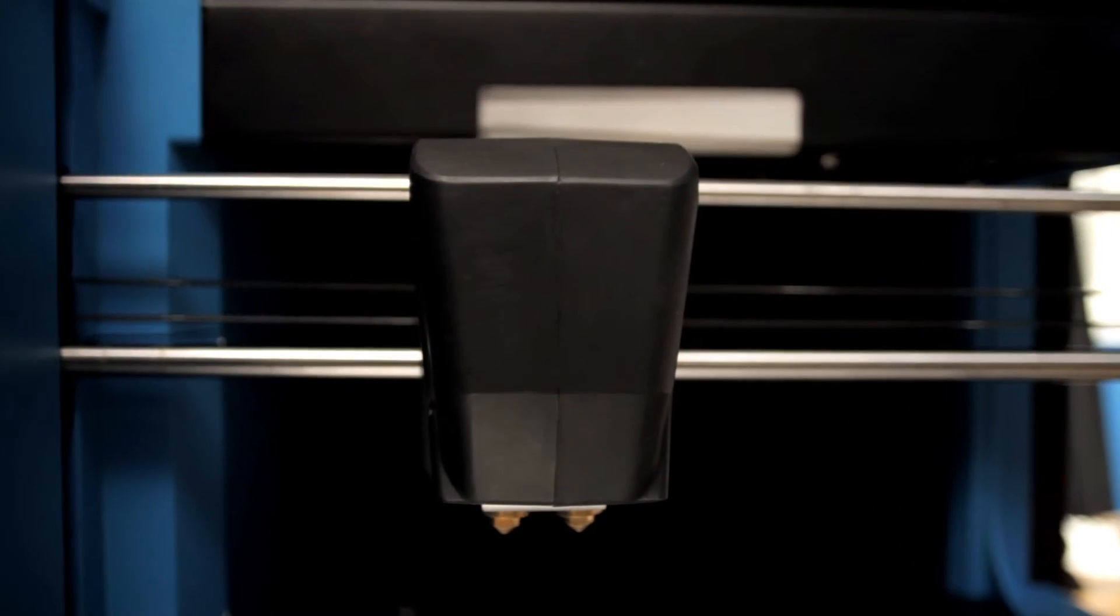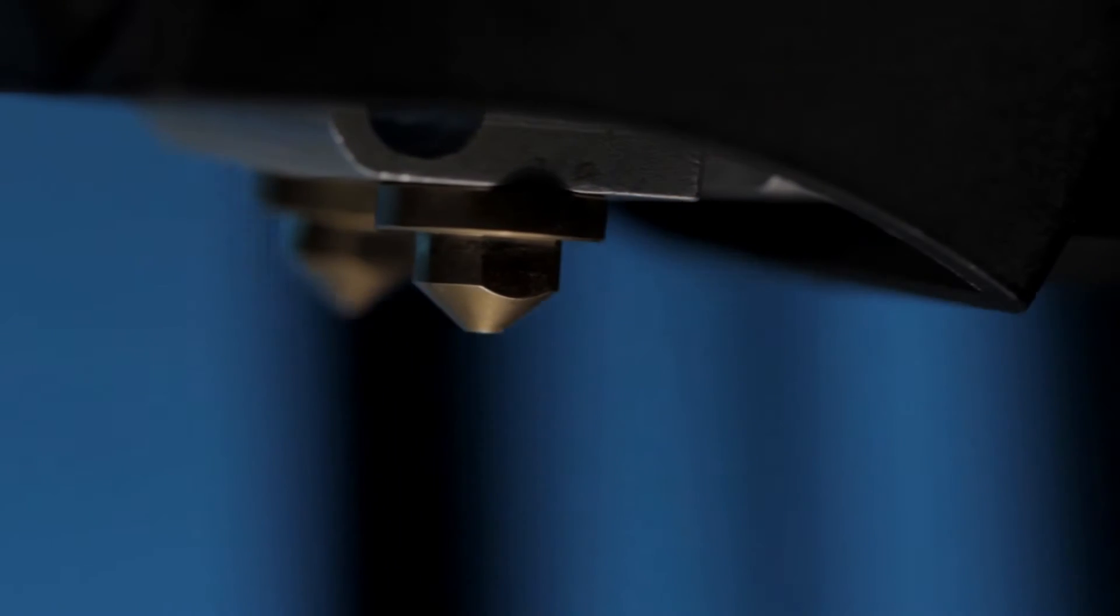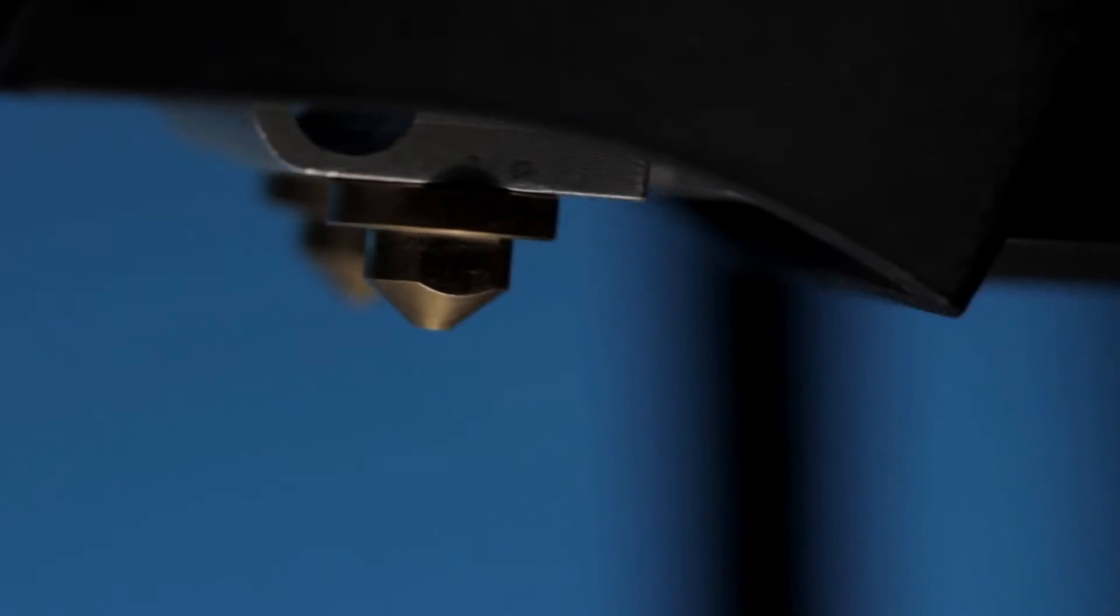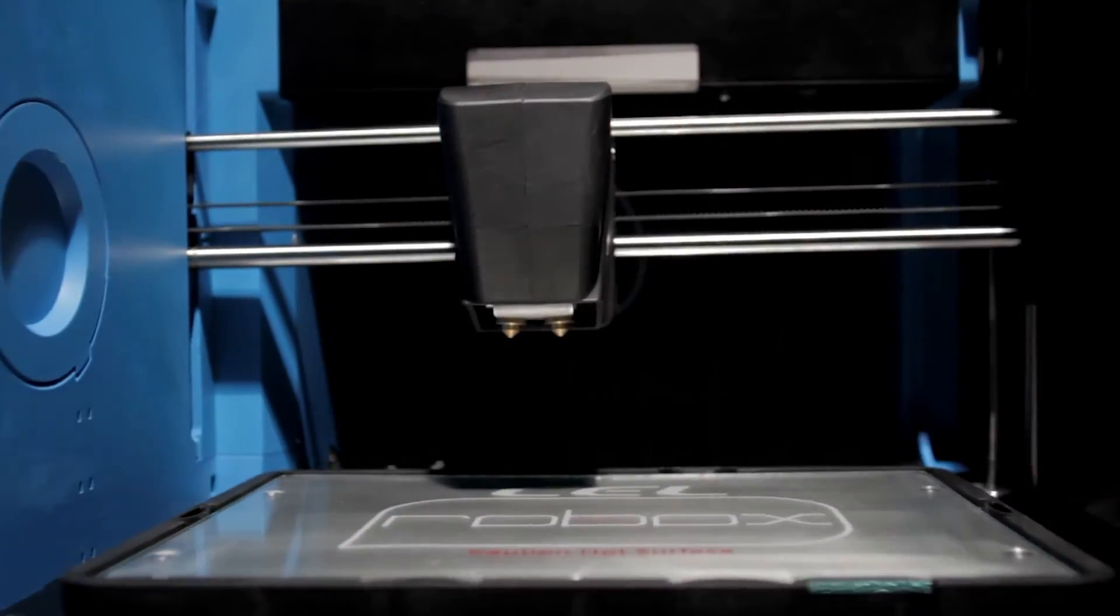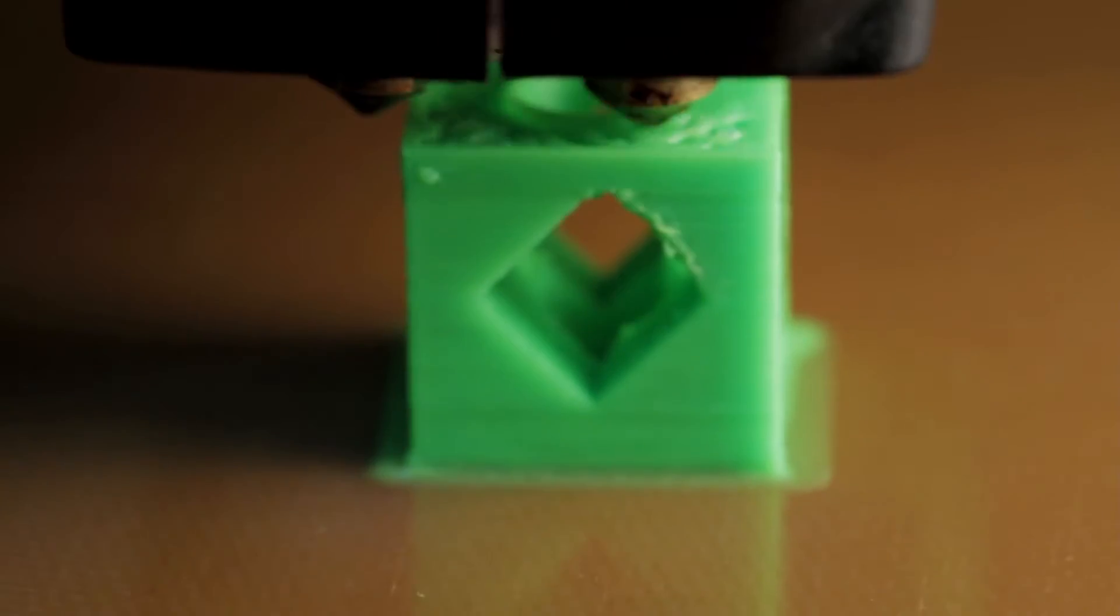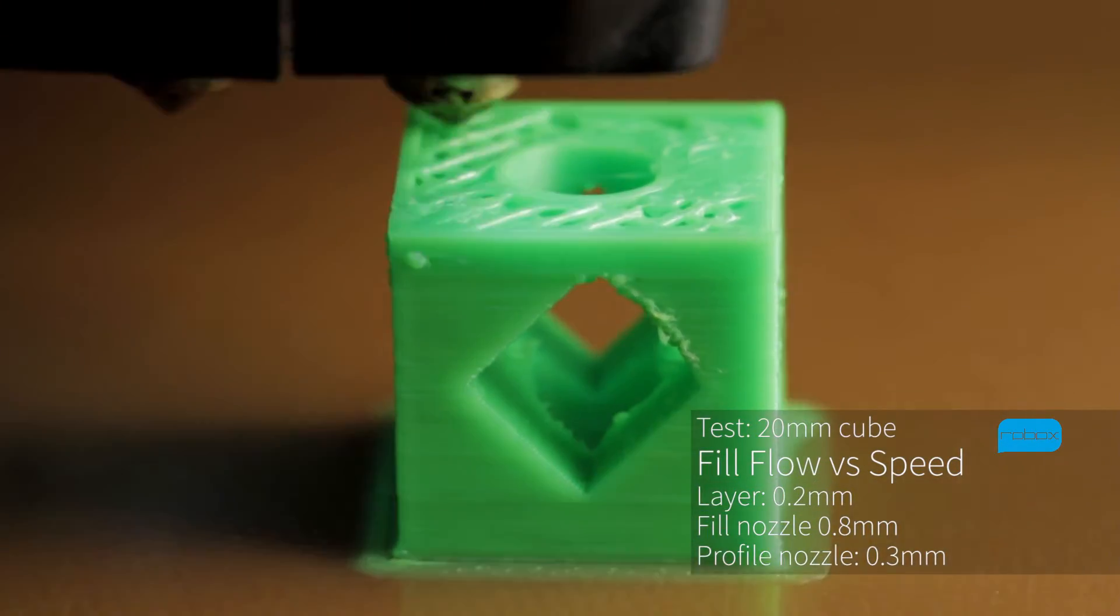In our head we have a twin nozzle system with a 0.3mm and a 0.8mm nozzle. This means you have a high-resolution but low-speed nozzle for completing the high-quality surface finish and perimeter of the part, and then a much larger nozzle capable of filling the part, resulting in print times up to 300% greater than our competitors.